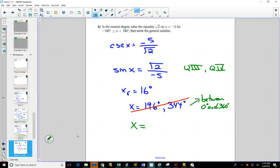Because what's coterminal with 344 degrees? That will be negative 16 degrees. What's coterminal with 196 degrees? That will be negative 164 degrees.